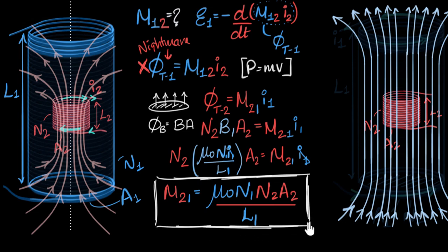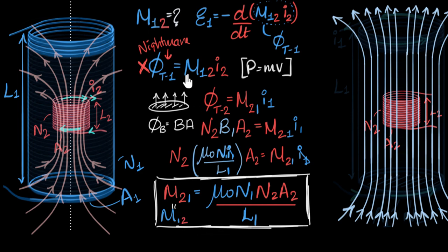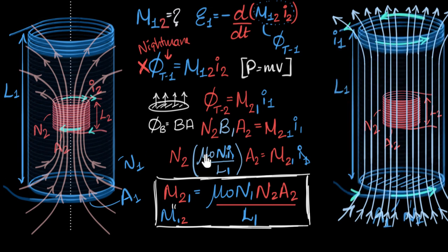The mutual inductance depends on the number of turns of both solenoids, the area of the smaller one (because that's where flux matters), and the length of the larger one (because it generates the field). M21 equals M12 — this is exactly the same value, and it's true for any two coils regardless of how complicated the system is. The big takeaway: whenever calculating mutual inductance, always pick the equation where flux calculation is easiest — where the field is uniform over the entire area — because M12 always equals M21.